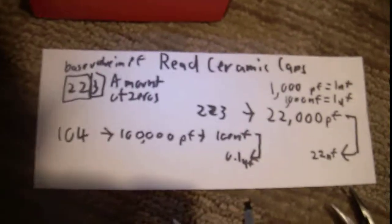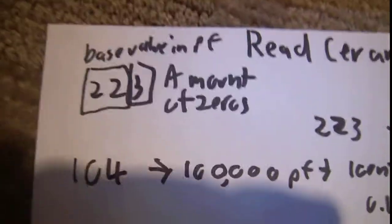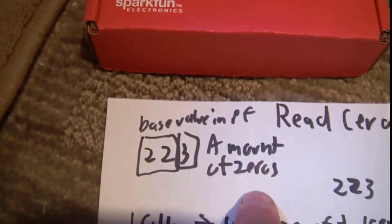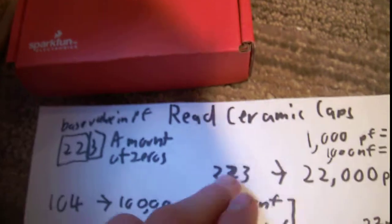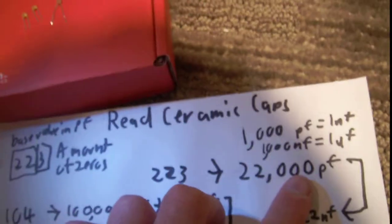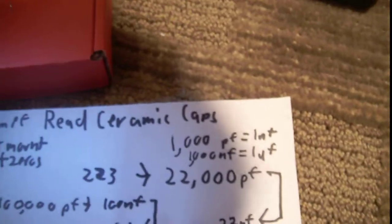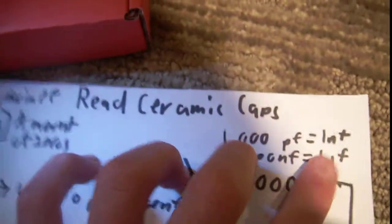You can see the sheet here. We have our example there. That big cap said 223. So you take the 22 — that is your base amount. You take the 3 — that is the number of zeros you're going to add. So you take 223, chop off the 3, and add that number of zeros to the 22, so that becomes 22,000. That value is in picofarads. To get to nanofarads, you divide by 1,000, because 1,000 picofarads equals 1 nanofarad.